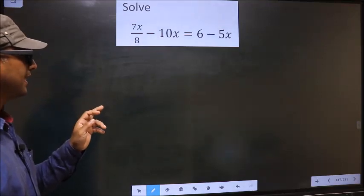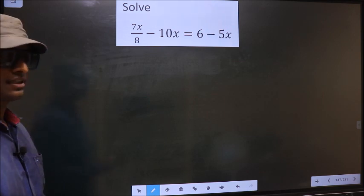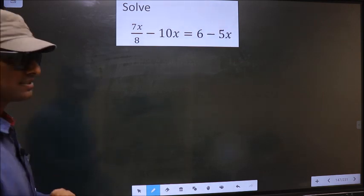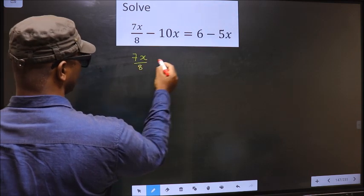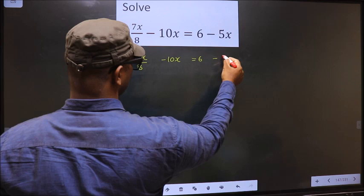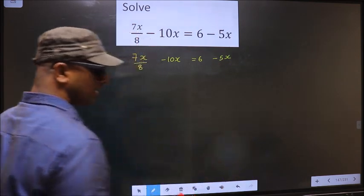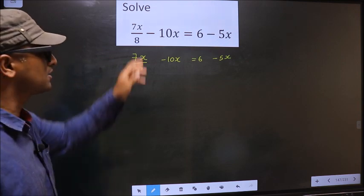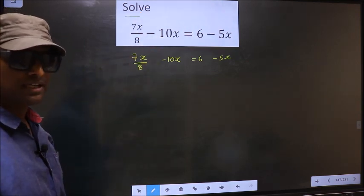Solve 7x/8 minus 10x equals 6 minus 5x. The given equation is 7x/8 minus 10x equals 6 minus 5x. Here they told us to solve, which means we should find the value of x.